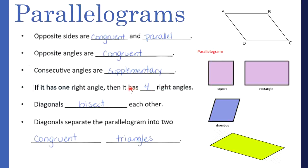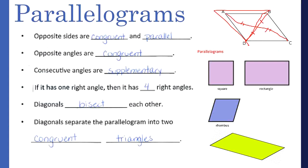If a parallelogram has one right angle, it has to have four right angles, which makes it a rectangle — we'll get to that in a second. Diagonals bisect each other: drawing a diagonal from B to D and from A to C, those diagonals bisect each other into congruent parts. The diagonals also separate the parallelogram into two congruent triangles — triangle ADB is congruent to triangle GBC.